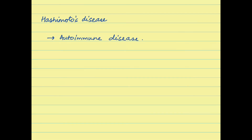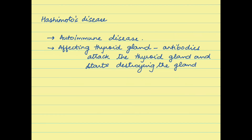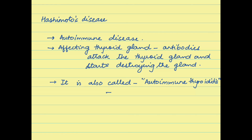The other disorder associated with the thyroid gland is Hashimoto's disease, which is an autoimmune disease — a disease where the immune system attacks the body's own cells. In this case, antibodies attack the thyroid gland, causing its destruction and a decrease in thyroxine levels. This is also called autoimmune thyroiditis, and is sometimes referred to as the suicide of the thyroid gland.